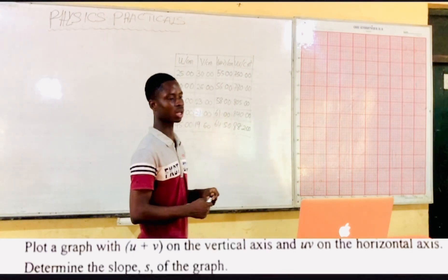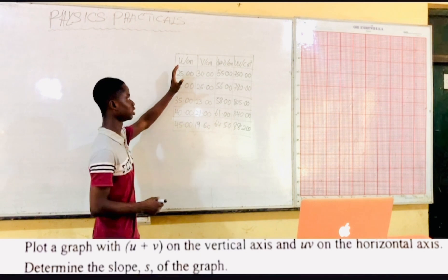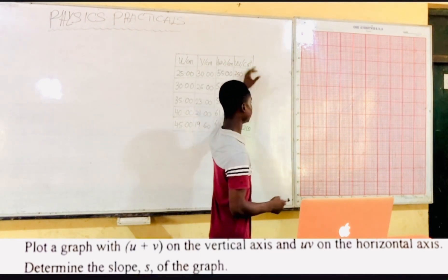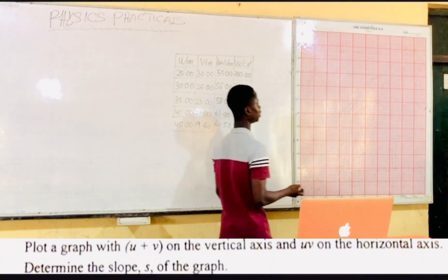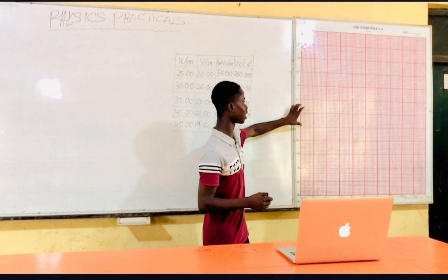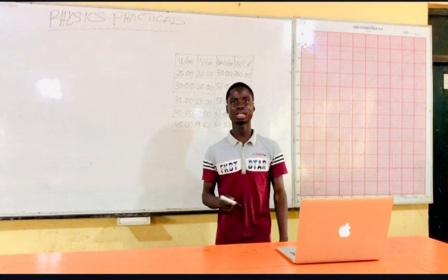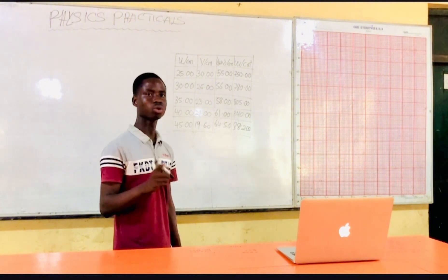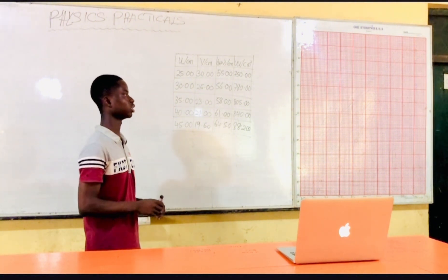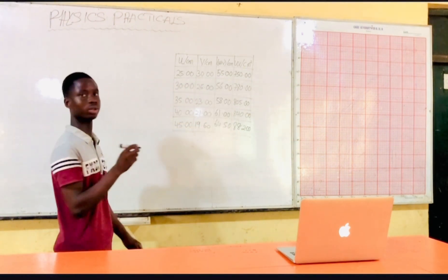Plotting a graph with U plus B on the vertical axis and UB on the horizontal axis. Before we plot our graph, we need to do a reasonable scale for both axes, for the vertical axis and for the horizontal axis as well. Here lies the problem: how to calculate your whole scale. It's much, much important because if you make the scale the wrong way at the beginning, first we need to calculate our reasonable scale.